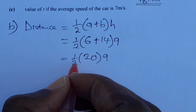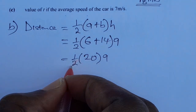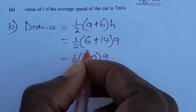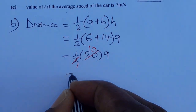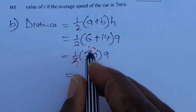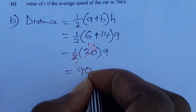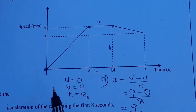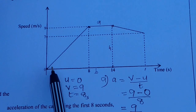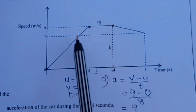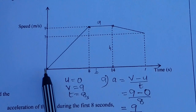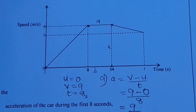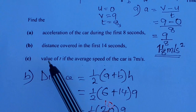We can cross-cancel: 2 into 2 is 1, 2 into 20 is 10. So we have 10 times 9, which is 90 meters. The car traveled 90 meters in the first 14 seconds.